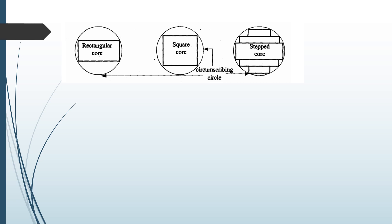This is the diagram for rectangular core, square core, and step core. In the rectangular core, all laminations used are of the same size, and this is also the case for square core. However, in the step core, different sizes of laminations are used, and each level has different types of laminations stacked together to form a step core.